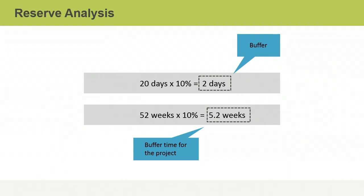In summary, there are a number of tools and techniques that can be used to estimate activity durations. They include expert judgment, analogous estimating, parametric estimating, and 3-point estimating. Project managers may also add a reserve to the estimates in order to account for uncertainties or risk.